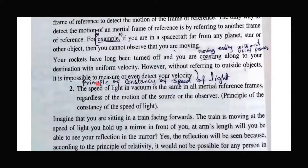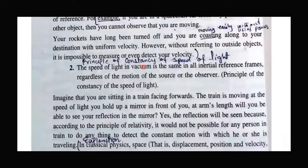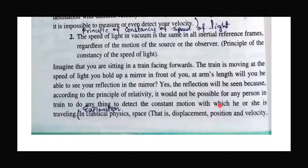The second postulate of the special theory of relativity is the principle of constancy of the speed of light. The speed of light remains the same in a vacuum for all kinds of inertial frames of reference. Whether the source, observer, or object is moving, the speed of light remains constant. The speed of light is a universal constant — it is the same for all.